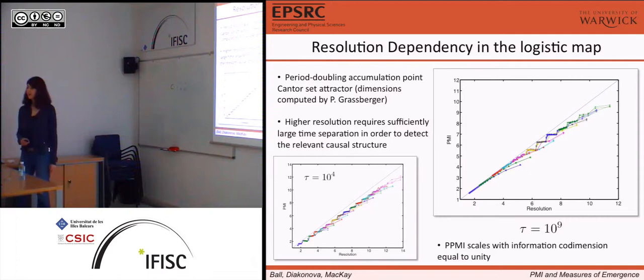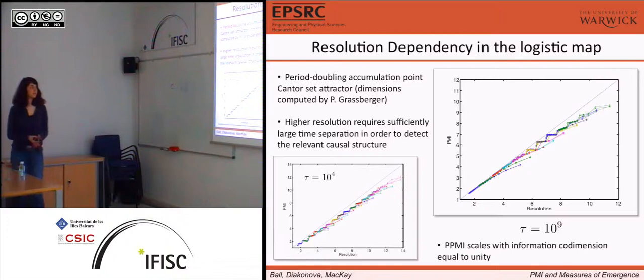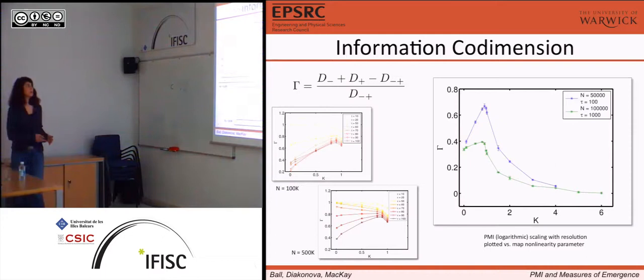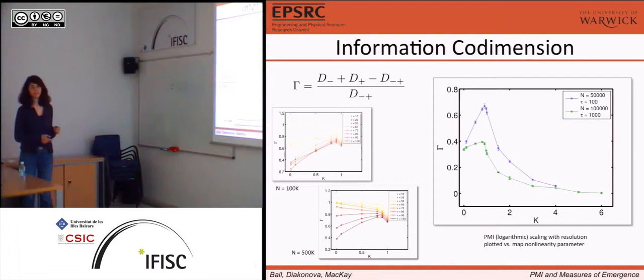You wouldn't see this in the logistic map, except at one parameter value — the period doubling accumulation point. This is a Cantor set that has a dimension, and we indeed see that PMI grows at a rate of one — so there is fractal causality there. If you look at the previous graph, measure the slopes of the lines, and plot that as a function of non-linearity, you'll get something with anomalous peaks. Those peaks are not expected. Gamma will decay to zero — a zero limit of gamma means that the information dimension of the joint distribution is just the sum of the information dimensions of the marginals.